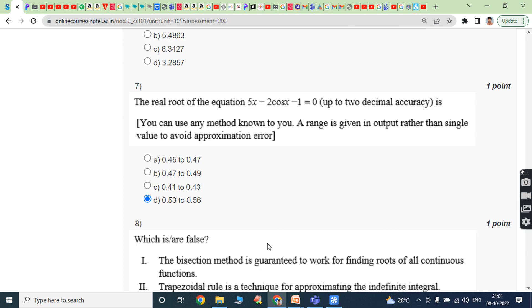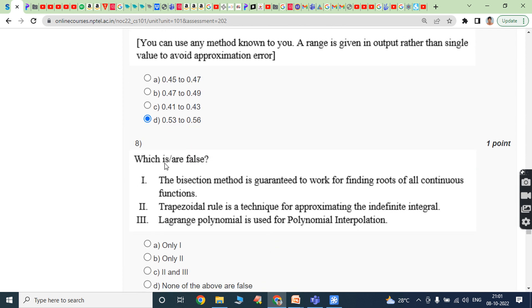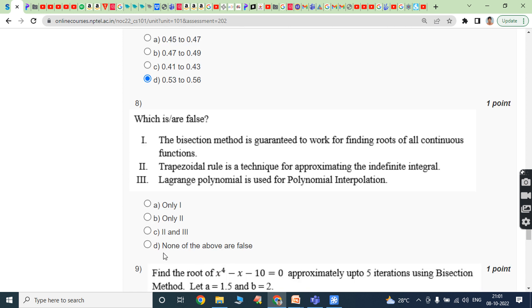Eighth question: Which is false among the three statements? First, the bisection method is guaranteed to work for finding roots of all continuous functions. Second, trapezoidal rule is a technique for approximating the indefinite integral. Third, Lagrange polynomial is used for polynomial interpolation. The answer is option D, none of the above are false.